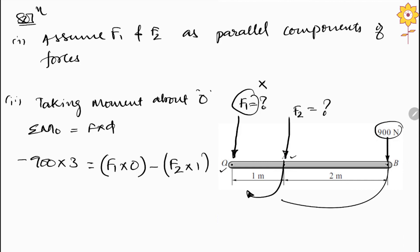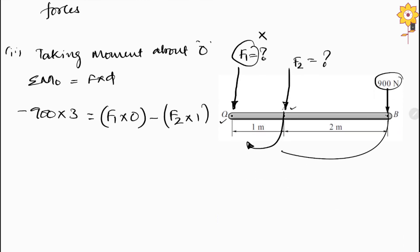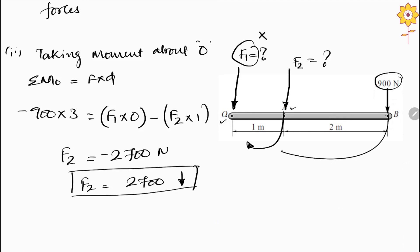From this equation we can find out F2. F2 would be equal to 2700 newton, which is negative, so we write F2 equal to 2700 newton acting downward. We have taken the moment about point O, and the summation of moment equals force times distance: 900 into 3 equals the given force.